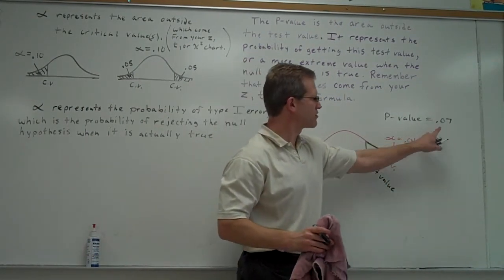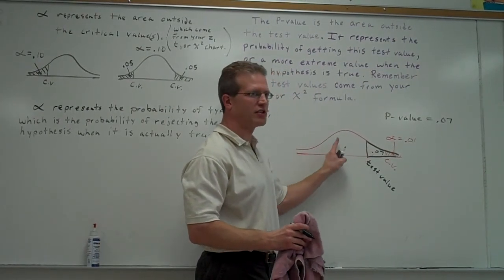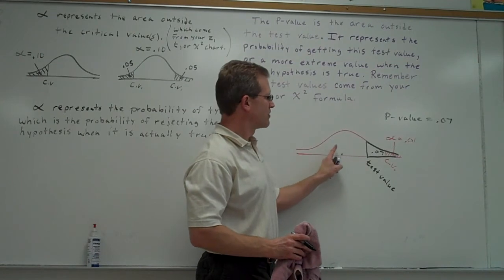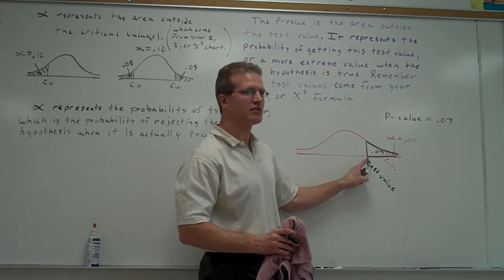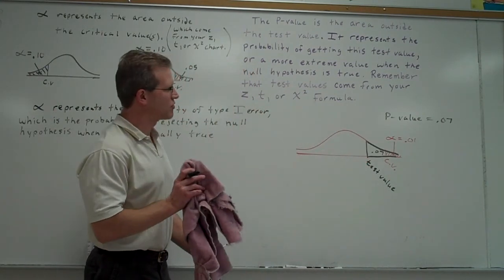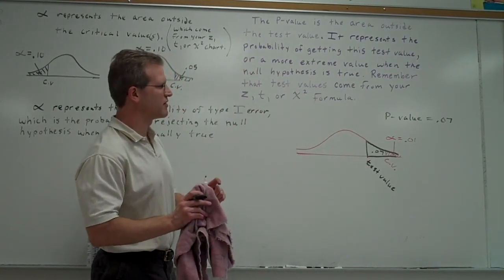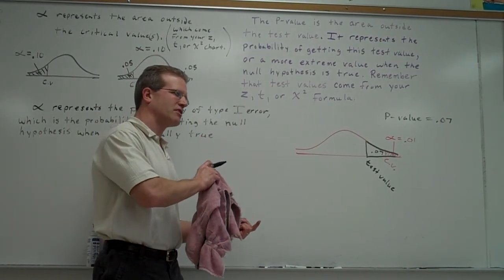So this area from here over is going to be 0.07. So the fact that the p-value is greater than alpha, that tells me the test value must be out in the do not reject region. So when your p-value is larger than alpha, you're going to say do not reject the null. So your rules are going to be if p-value is less than alpha, you'll reject the null. If p-value is greater than alpha, you do not reject the null.